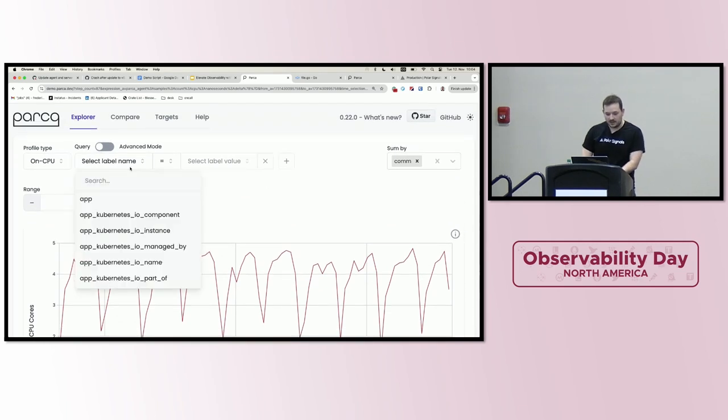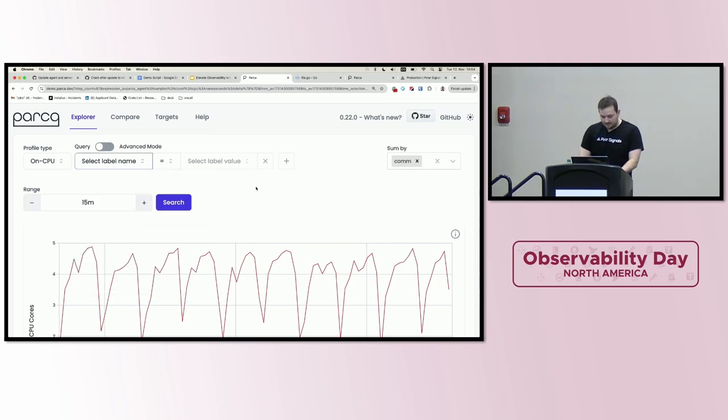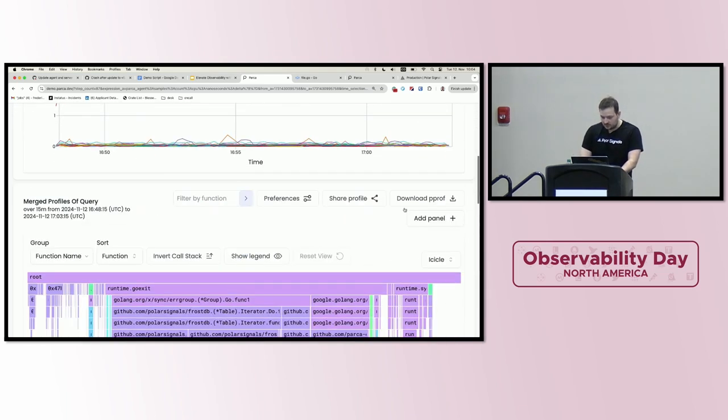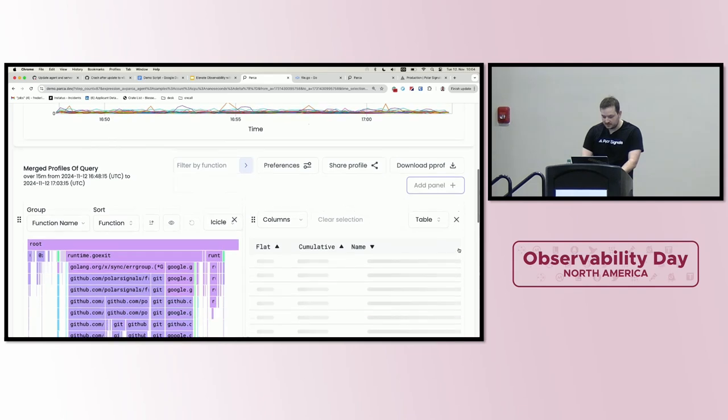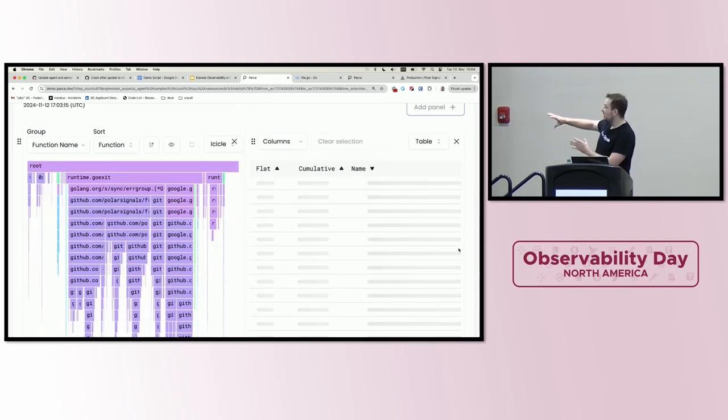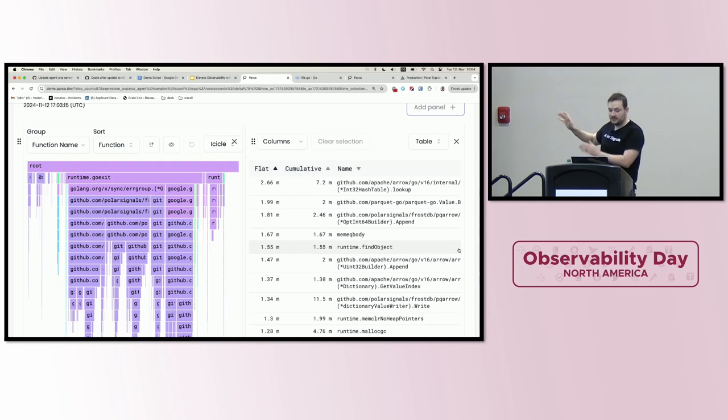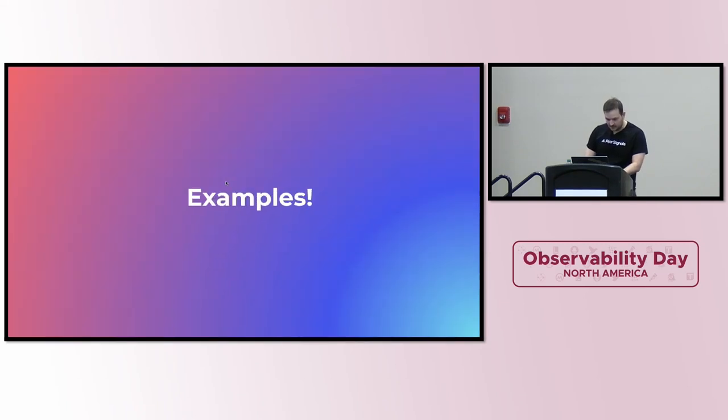In Parca, you can kind of also filter by labels in the same way as you're probably familiar with Prometheus. We also have some kind of cool visualizations, not just the flame graph itself, but also various other ones. But I just wanted to give a super, super quick demo. I'm going to dive into some concrete examples of where profiling was used or could be used to optimize.